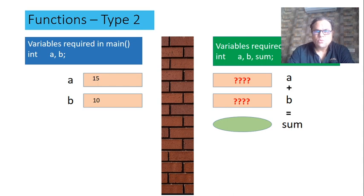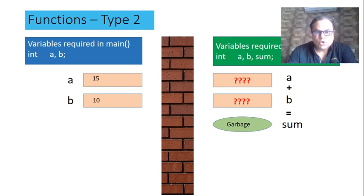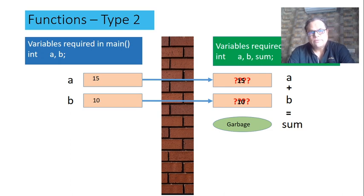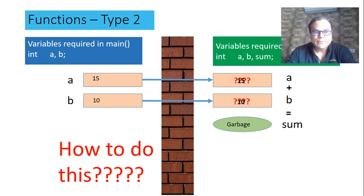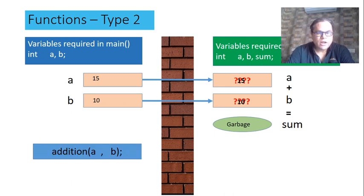If we perform addition of a and b and store the result into sum with garbage values, we will get a garbage result. To overcome this situation, we need to pass the values of a and b from main to the a and b of function addition. This is called parameter passing. We want to replace the garbage value in a with 15 and the garbage value in b with 10. This can be achieved by using the function call command.